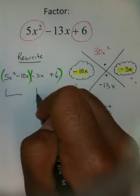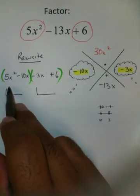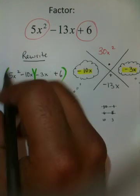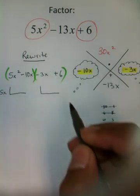So from here, you'd start using GCF. What do these have in common? Oh, Mr. Moya, those have a 5x in common.